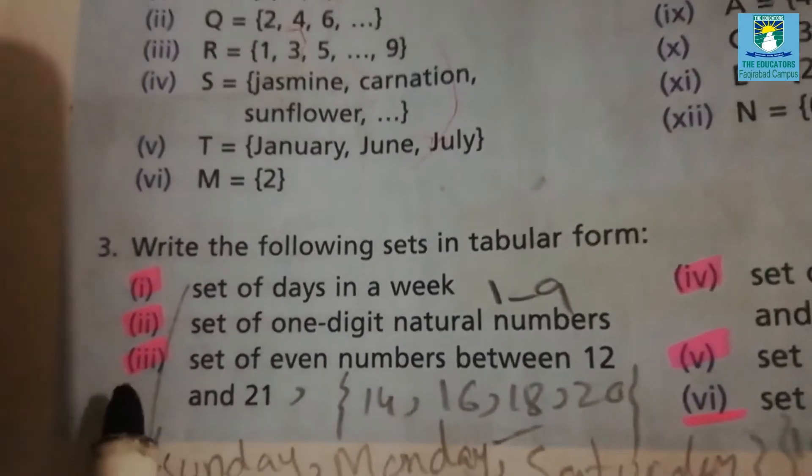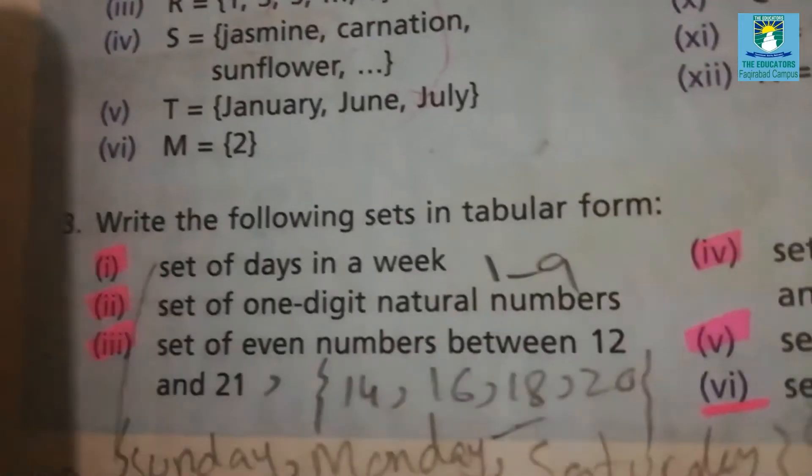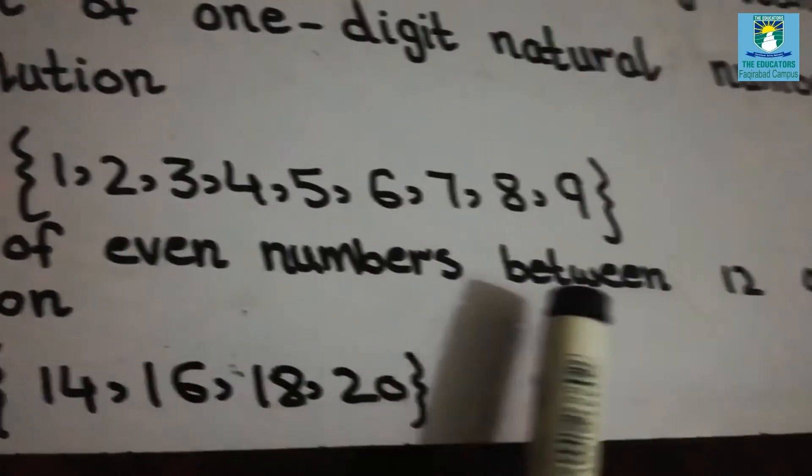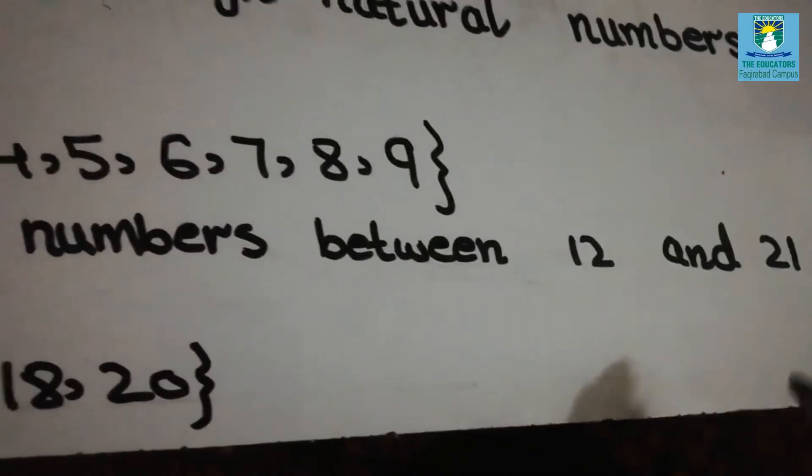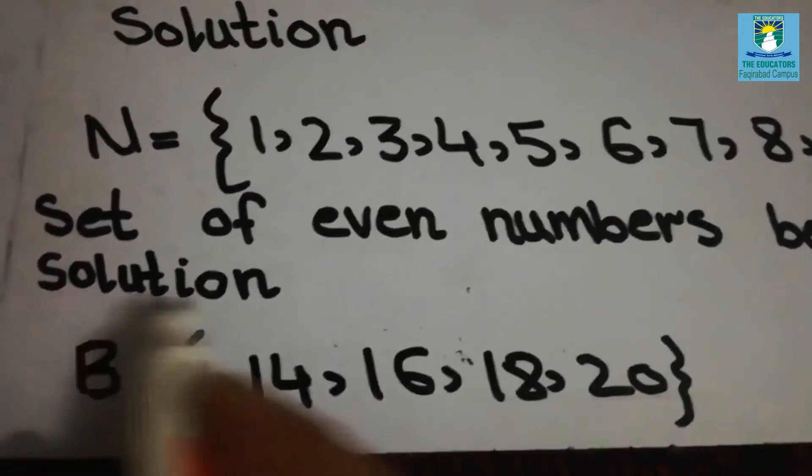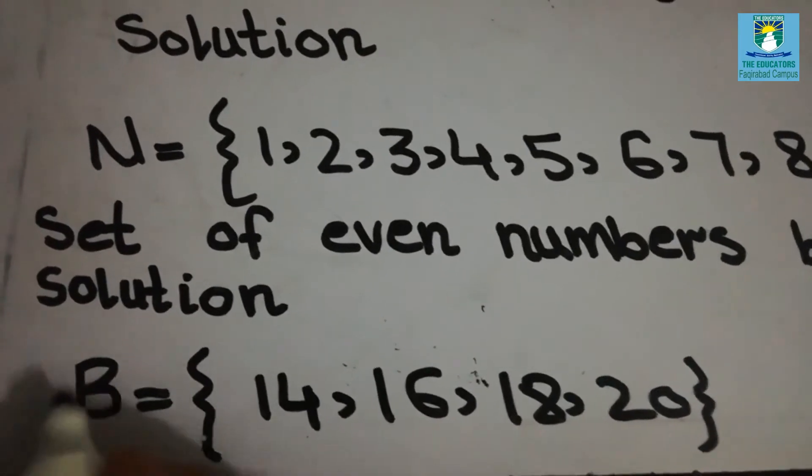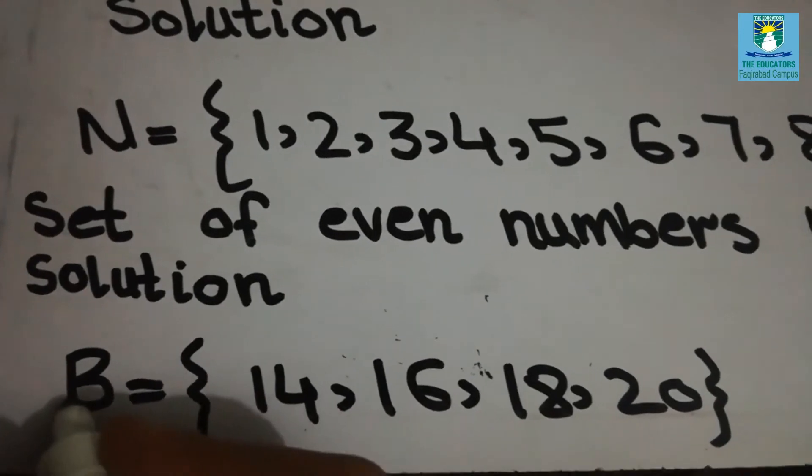Part 3. Set of even numbers between 12 and 21. Now we have to write set of even numbers between 12 and 21. Solution. First we will denote the set with capital alphabet. It's B.